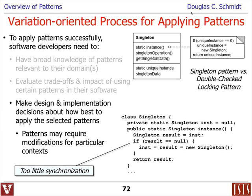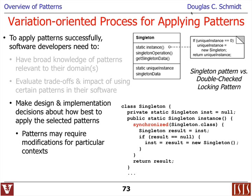Then a later problem arose as people tried to use the singleton in a concurrent environment with multiple threads of control running simultaneously. I ran into this problem about 20 years ago at Washington University — my program wasn't working correctly on a 20-CPU multiprocessor. The classic singleton implementation has insufficient synchronization in a multi-threaded environment. In Java, one way to fix this is using synchronized blocks or synchronized methods.